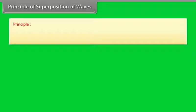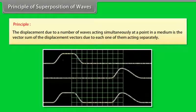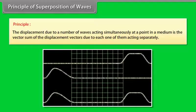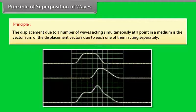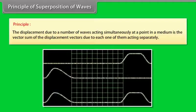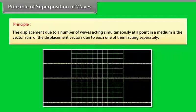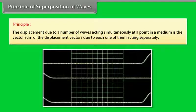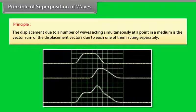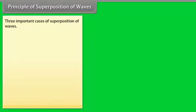Principle of superposition of waves: The displacement due to a number of waves acting simultaneously at a point in a medium is the vector sum of the displacement vectors due to each one of them acting separately. Consider two pulses approaching each other. When the pulses cross each other, they combine to produce a resultant pulse. After crossing each other, they again begin to travel independently as if nothing had happened. This gives rise to three important cases of superposition of waves.